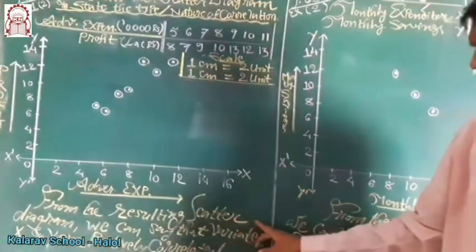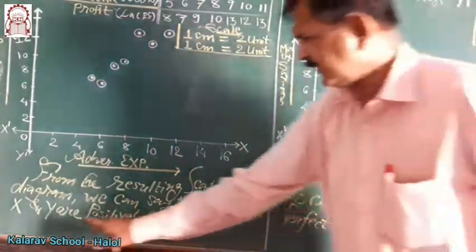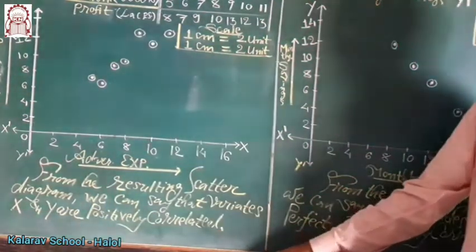From the resulting scatter diagram, we can say that the variables, means variates, x and y are positively correlated of high degree.